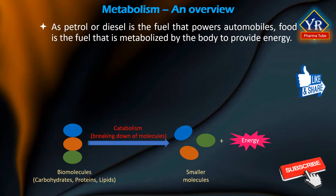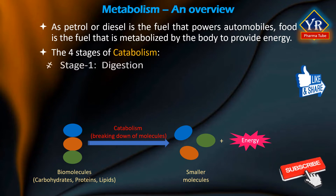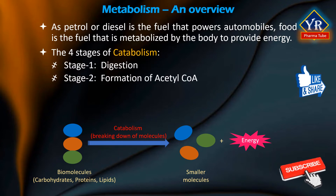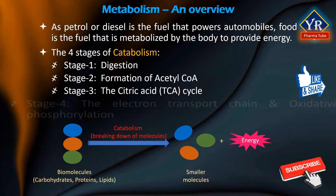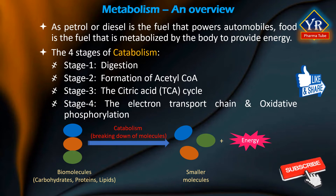This process involves numerous catabolic pathways that can be organized into four stages. Stage 1 is digestion. Stage 2 is the formation of acetyl-CoA. Stage 3 is the citric acid or tricarboxylic acid cycle. And stage 4 is the electron transport chain and oxidative phosphorylation.